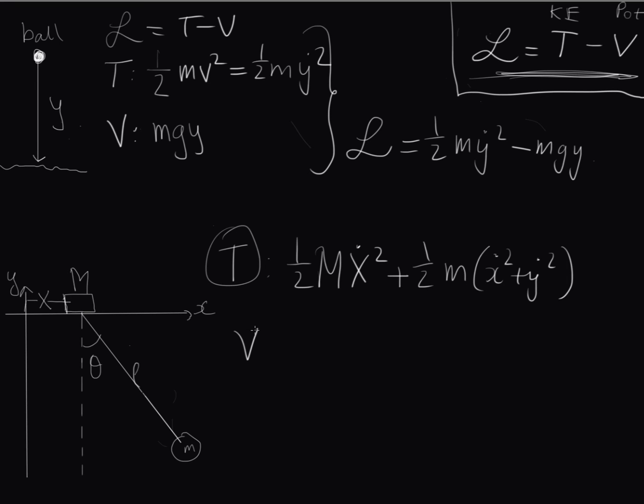Now we want to look at our potential energy. So this first mass doesn't have any potential energy as far as we care. It's only this mass down here and can you guess what it is? If you guessed gravitational potential energy you're correct. So its potential energy will be equal to m g y.